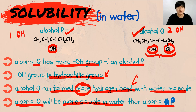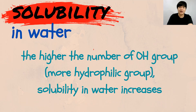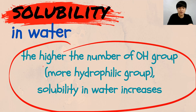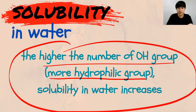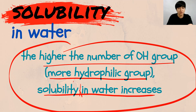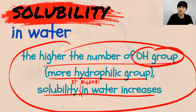As a result, alcohol Q will be more soluble in water than alcohol P — due to the presence of two OH groups, which is the hydrophilic group that can form more hydrogen bonds with the water molecule. As a conclusion: the higher the number of OH groups, the higher the hydrophilic group, the higher the solubility of alcohol in water. OH group higher, solubility higher.